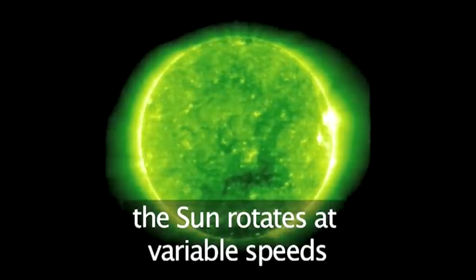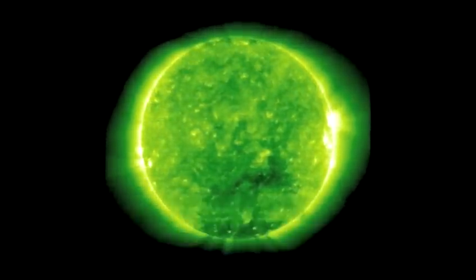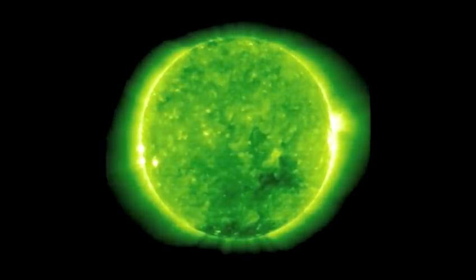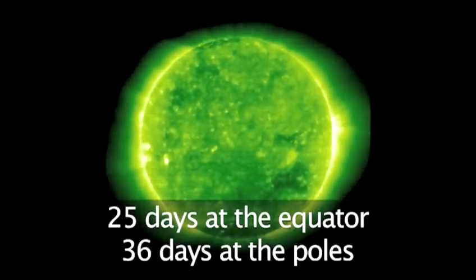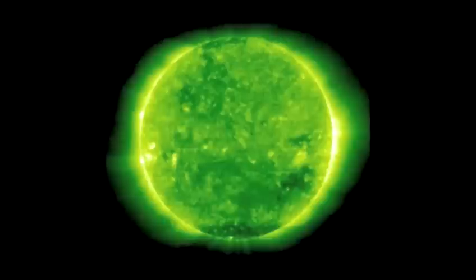Like the earth, the sun rotates but at different speeds across its surface. At the equator it rotates once every 25 days, but at the poles it takes about 36 days.